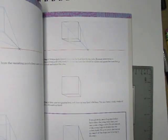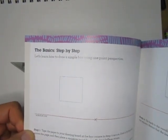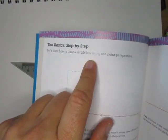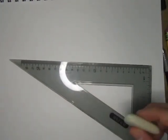Okay, so here we go starting. Step one - okay, the basic, let's learn how to draw a simple box using one point perspective, the basic step-by-step. All right, put my bookmark back in there.